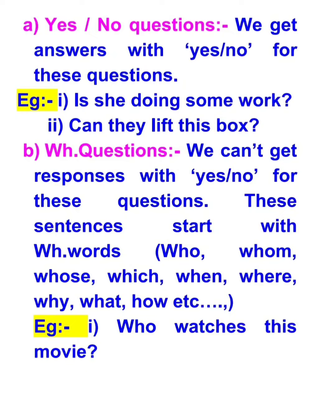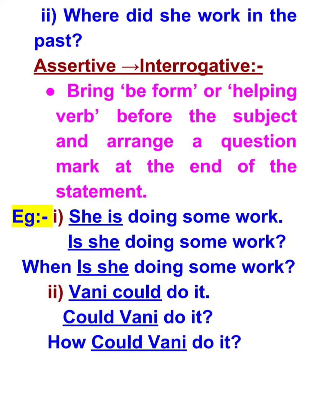Look at the examples. 'Who watches this movie?' — we can't get a response with yes or no, so we must provide a specific answer. It is a WH question. 'Where did she work in the past?' — we also cannot answer with yes or no, so it is also a WH question.